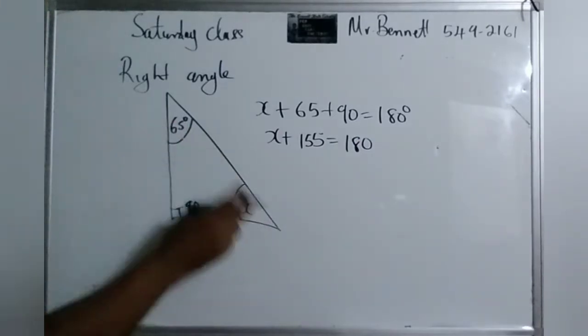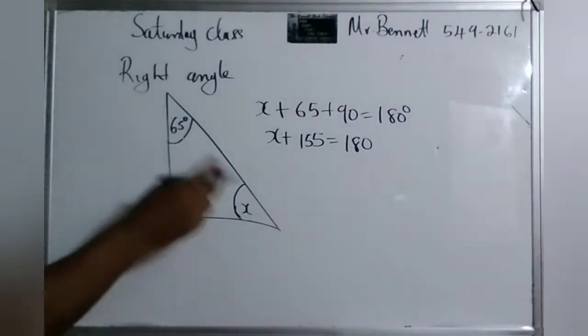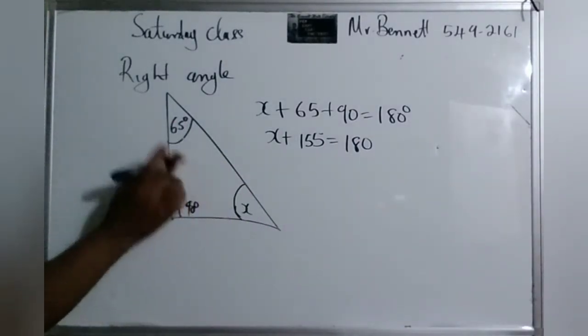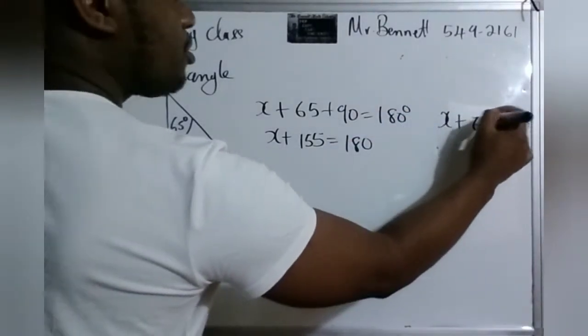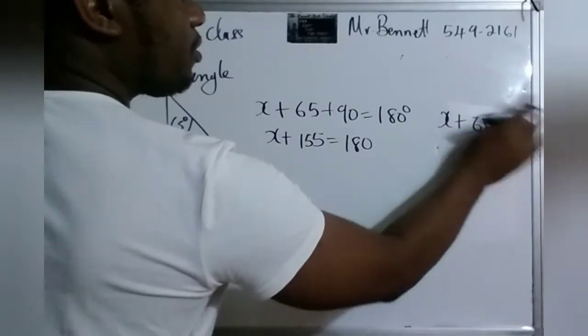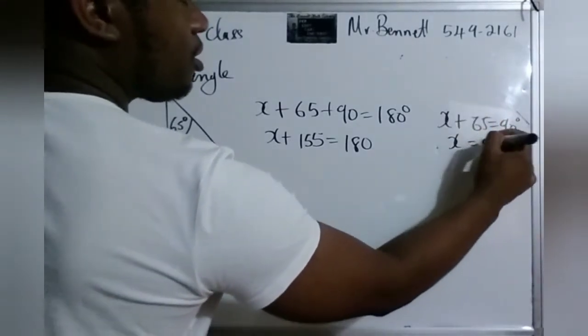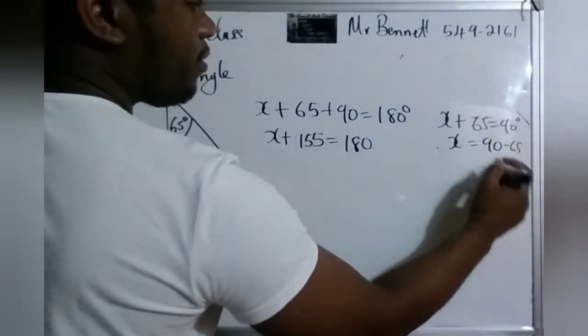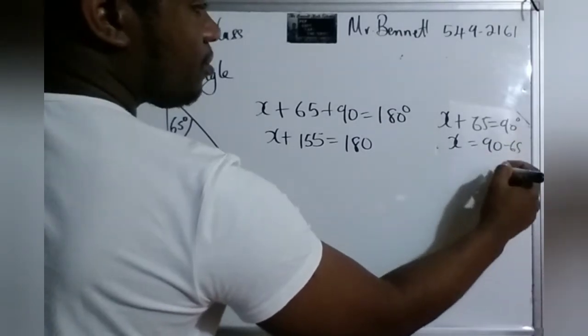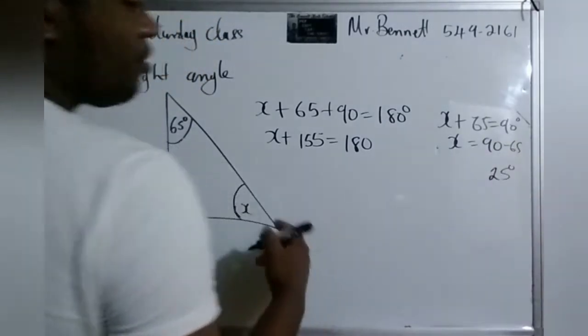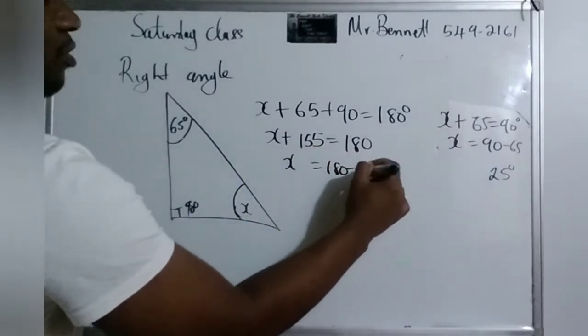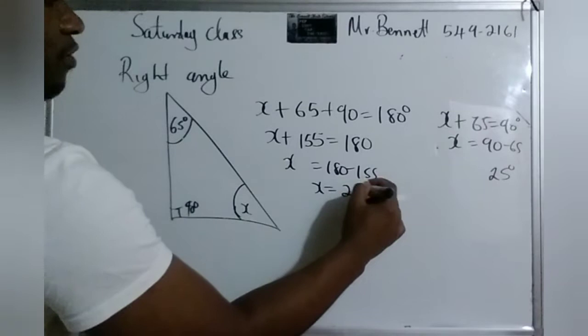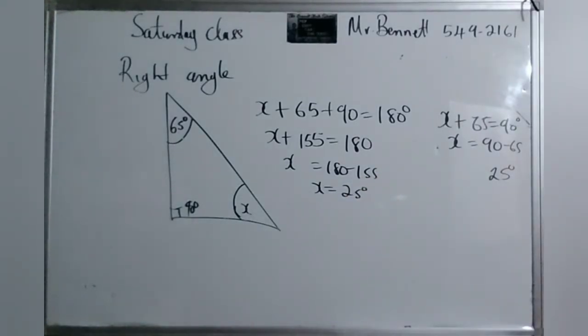Yeah. We could do that also, because these are complementary. So we could just say, because we already know this is 90, so this plus this is equal to 90. So you are indeed correct. We could have just said x plus 65 equals 90. Very good. And then we do a subtract. 65, 5 from that, 6 from here, 25. We could have also done it like this. So x is equal to 180 minus 155. So x is equal to 25 degrees. Very good.